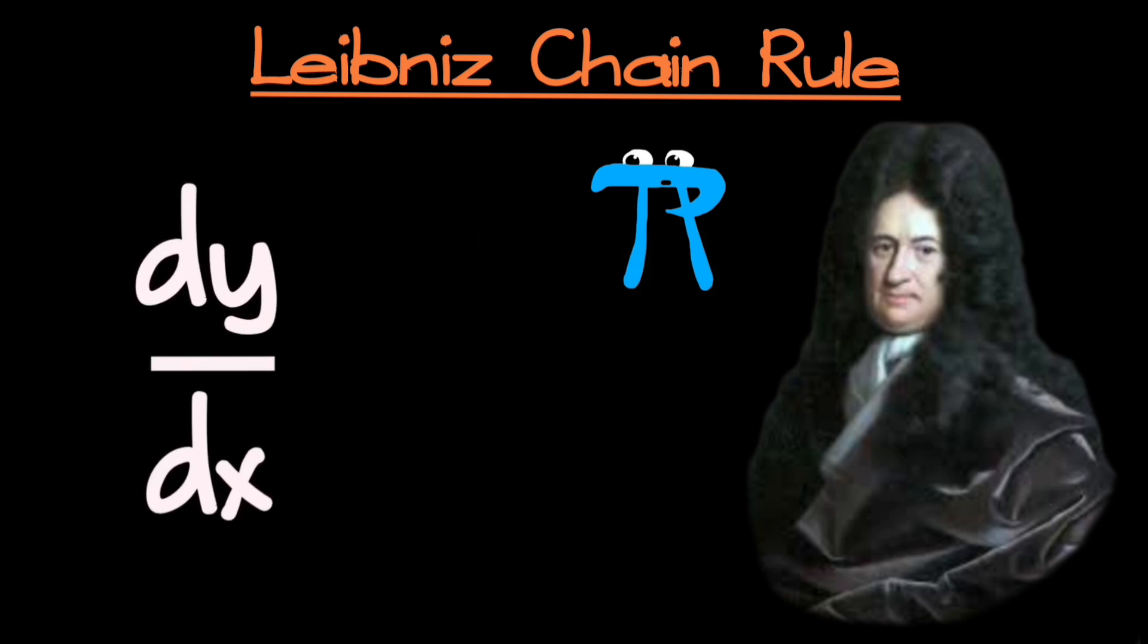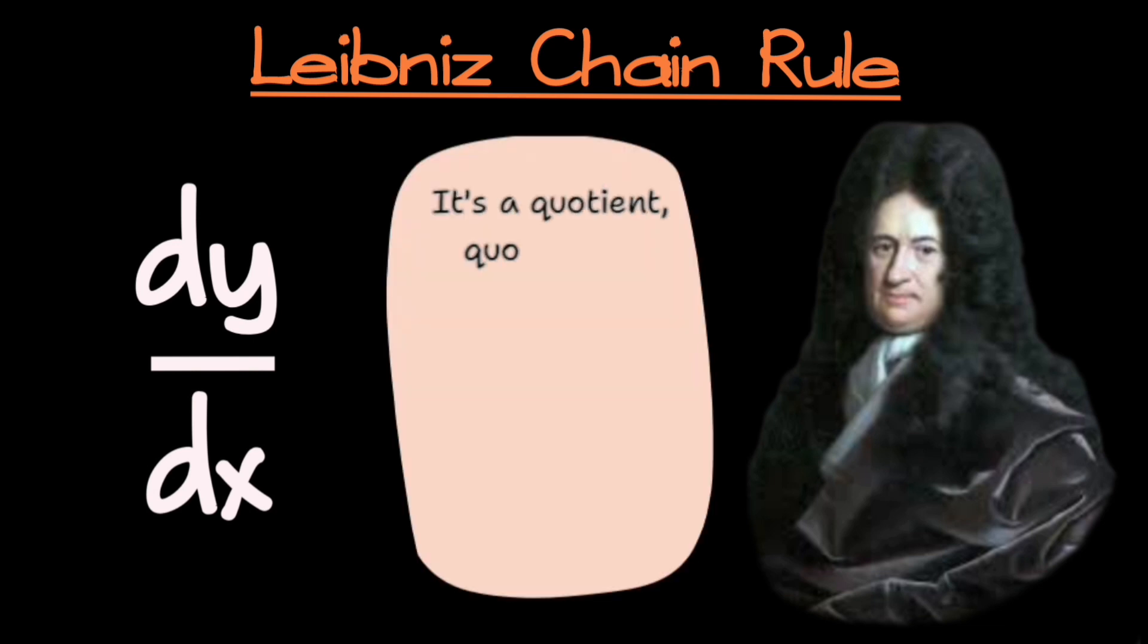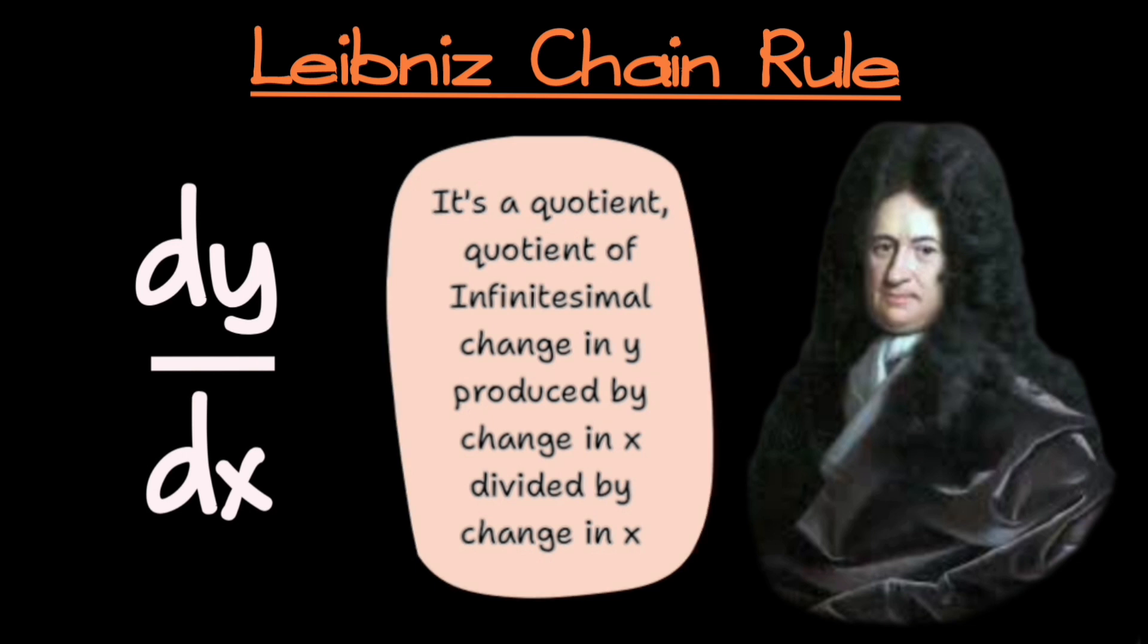When Leibniz conceived the notation of dy over dx, it was supposed to be a quotient. It was the quotient of infinitesimal change in y produced by change in x divided by infinitesimal change in x.